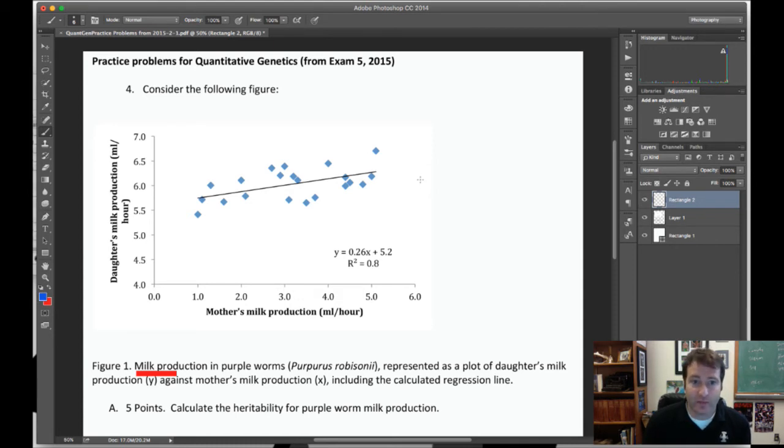So one of the ways that we can calculate narrow sense heritability, and remember the heritability shorthand is h squared, please don't take the square root, is by capitalizing on the fact that additive genetic variance is primarily what is responsible for resemblance between relatives. And that's what's captured in this parent-offspring regression. So we've got the trait in offspring over here.